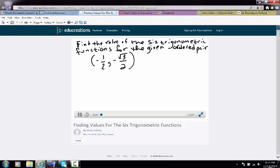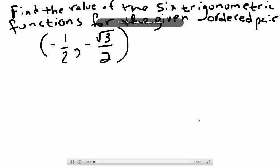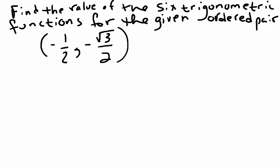In this video, we're going to learn how to find the value of the six trigonometric functions for the given ordered pair. We'll be taking the unit circle approach, which means we'll be assuming that the radius has a length of 1.